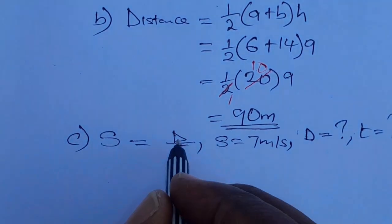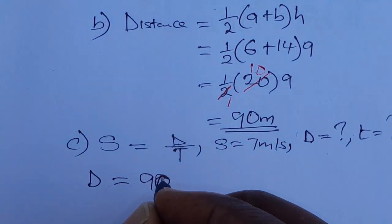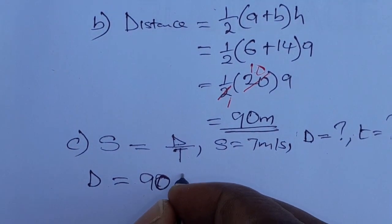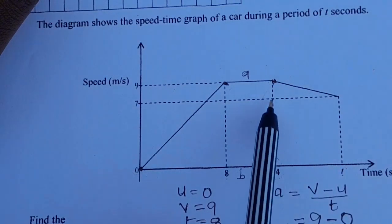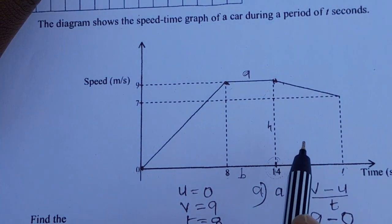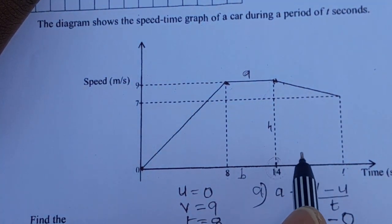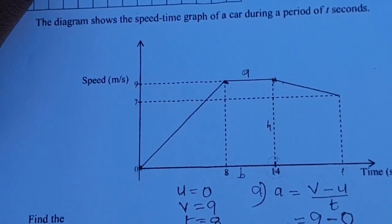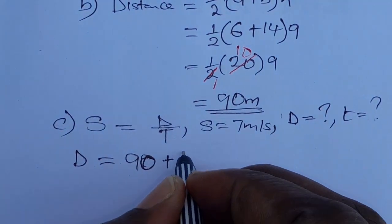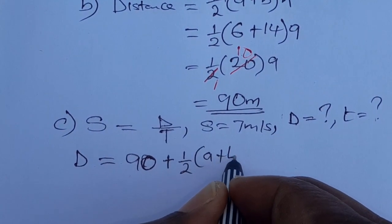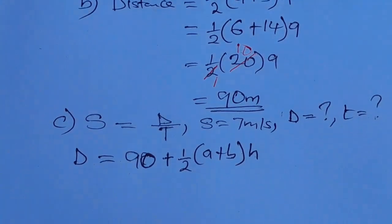The total distance equals 90 meters, which the car covered in the first 14 seconds, plus the distance in the remaining section. That shape is also a trapezium, so we again use the formula: half times (A plus B) times H. We need to find A, B, and H for this trapezium.